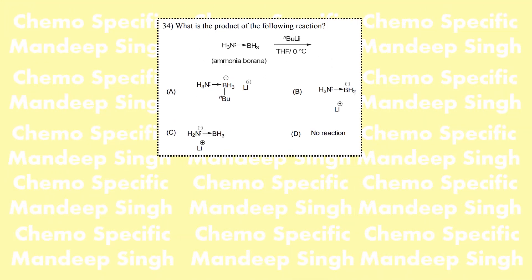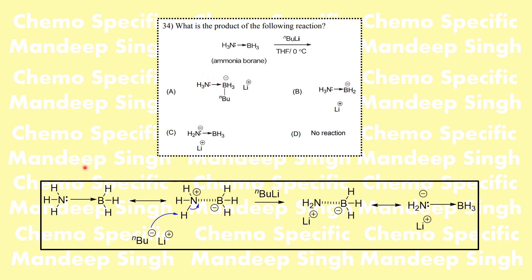For the ammonium borate problem: nitrogen has its empty MO and boron has electrons — or we can write it with nitrogen bearing a positive charge and bromine becoming negatively charged. When n-butyllithium is added as a strong base, it abstracts the acidic proton to give the desired compound. The correct option is C.